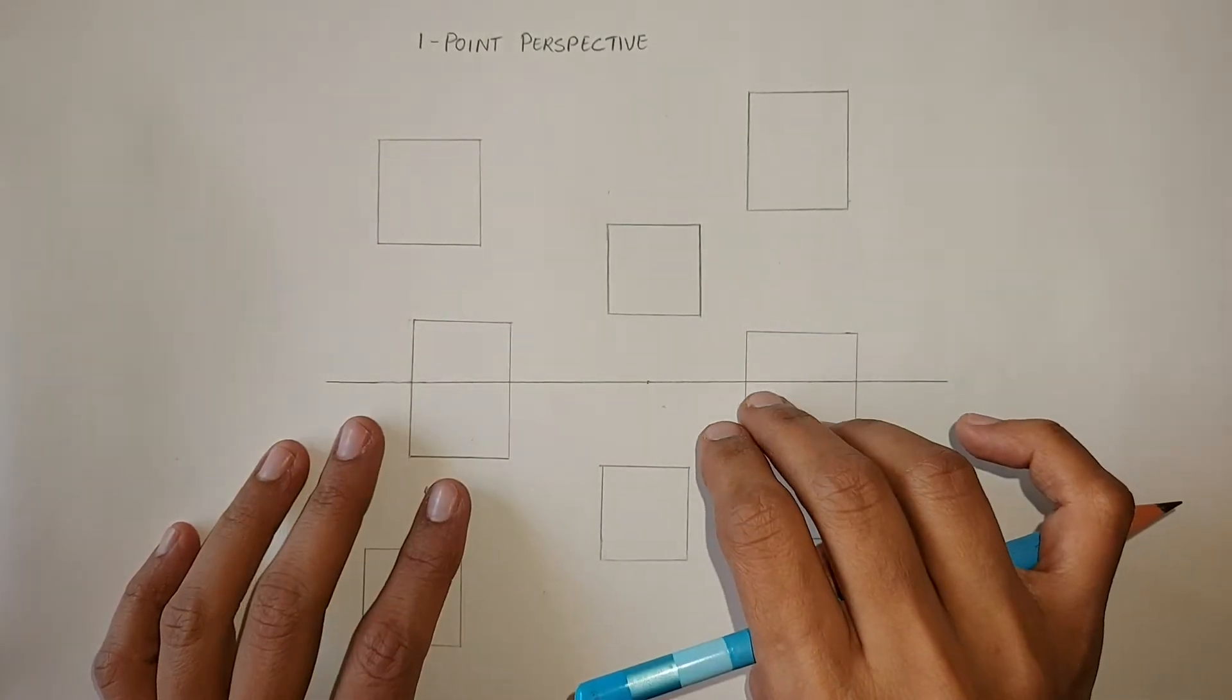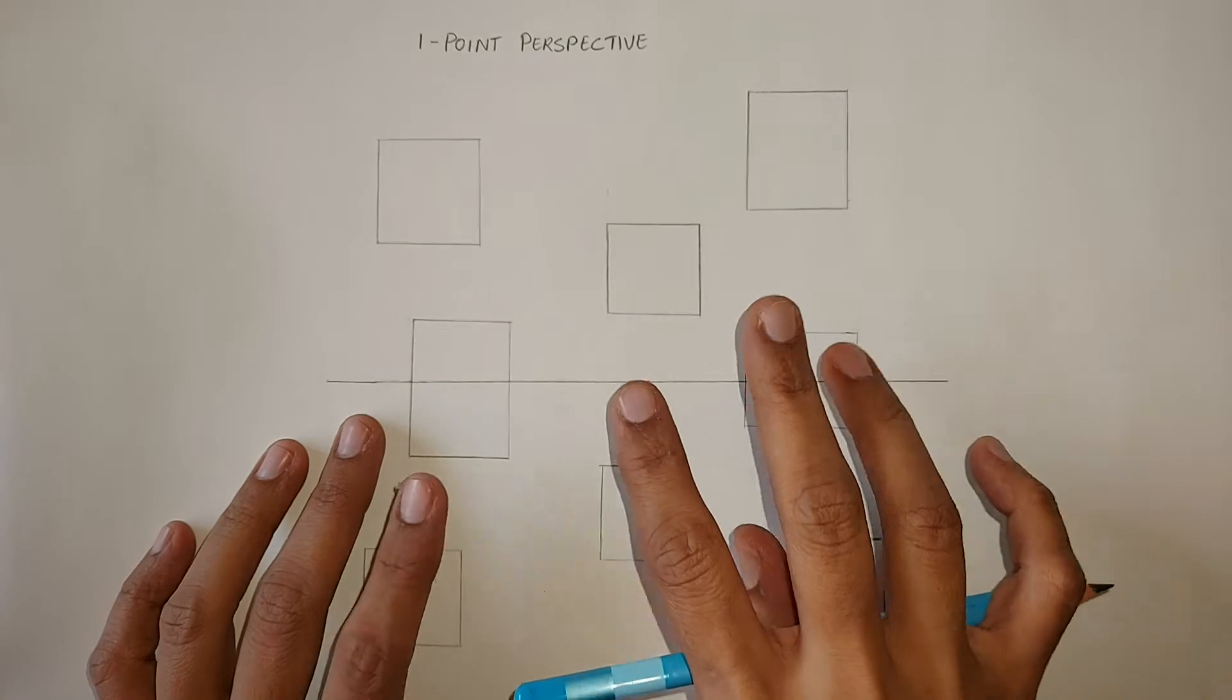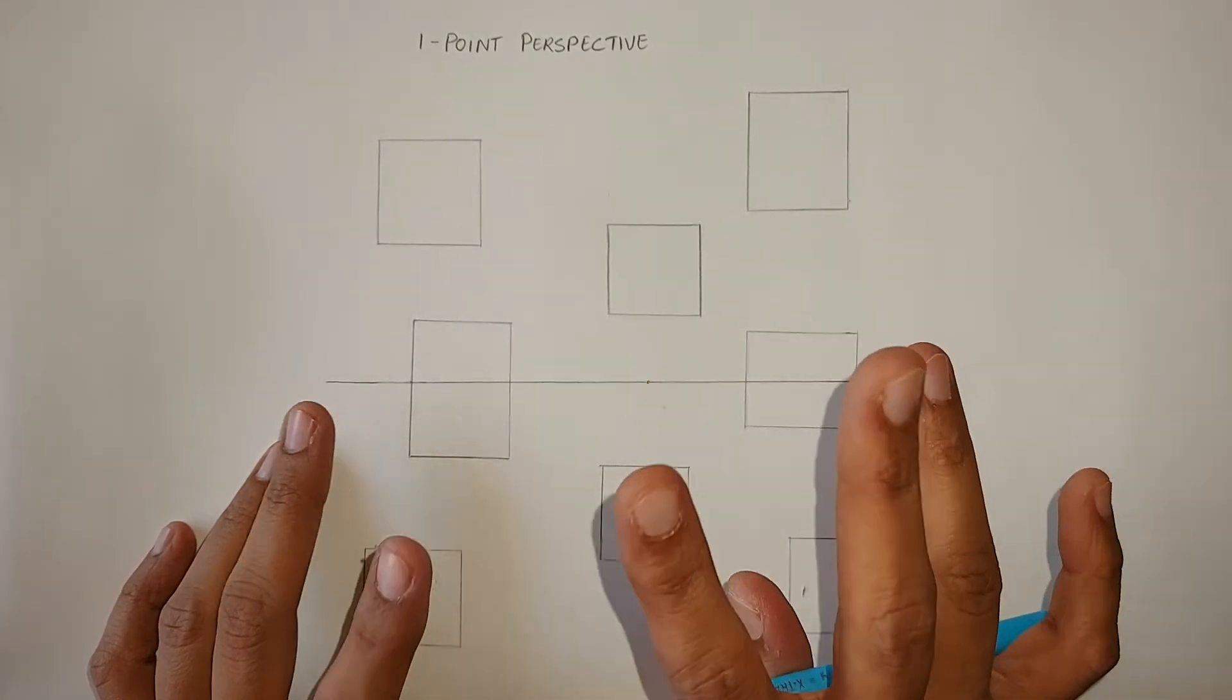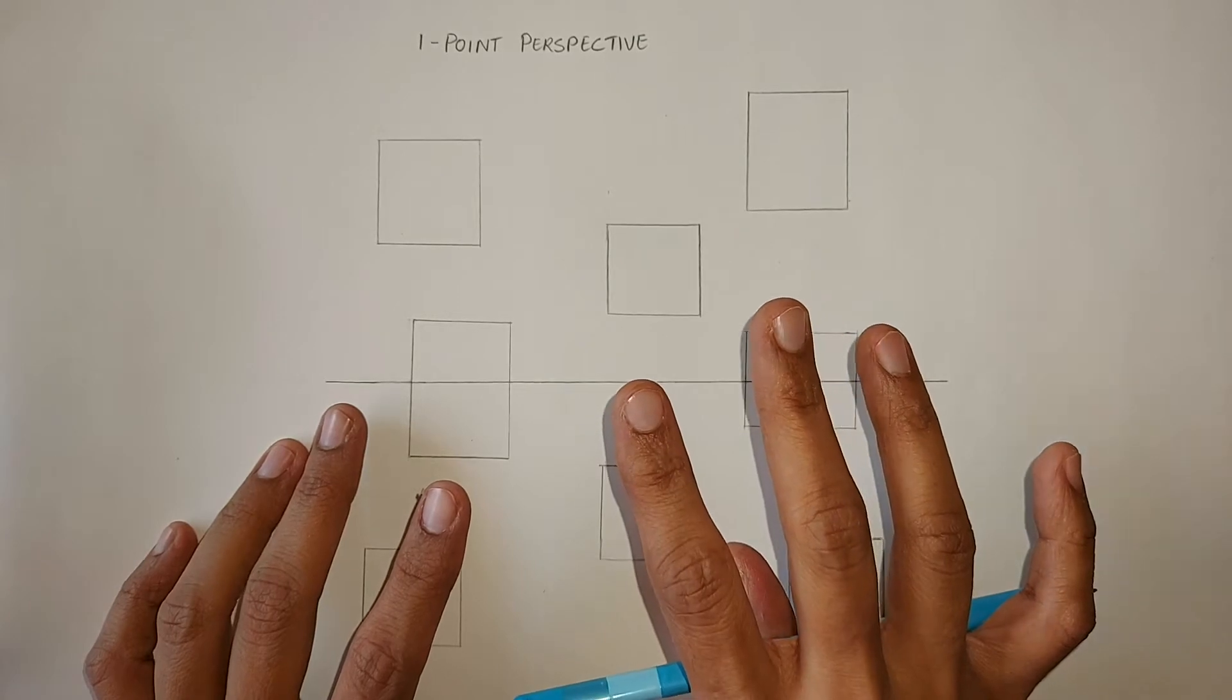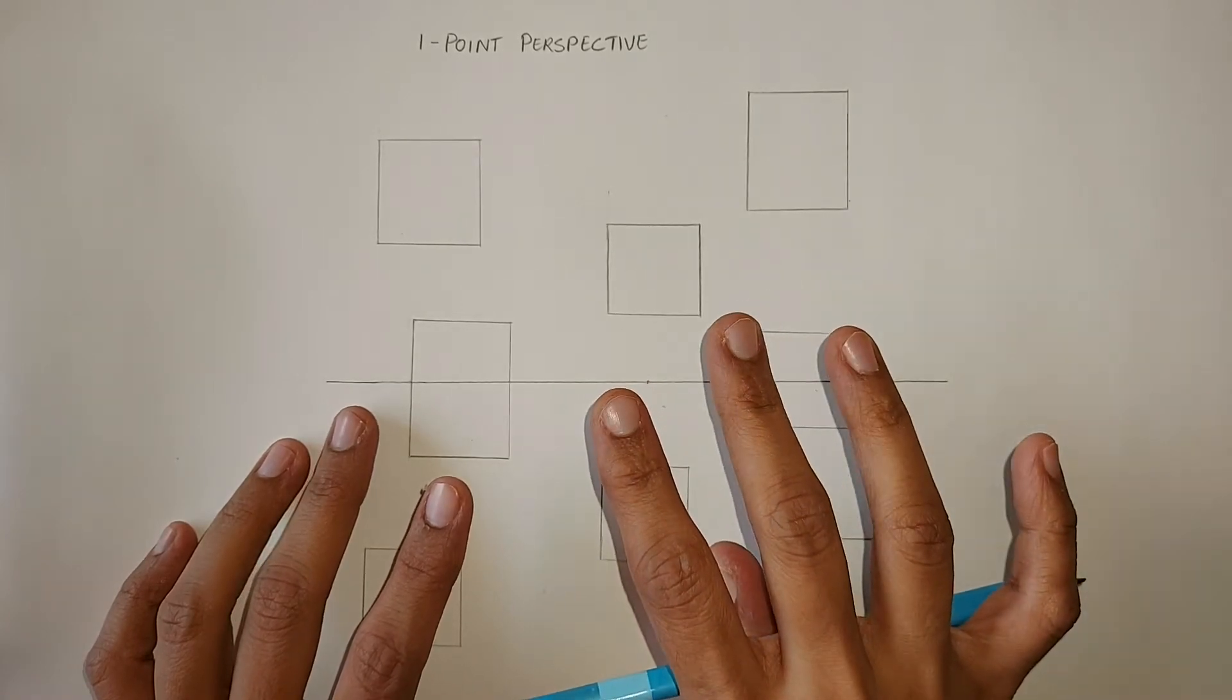One point perspective is the simplest of all the kinds of perspective methods of drawing. It is called one point perspective because all the lines travel back to a single vanishing point.